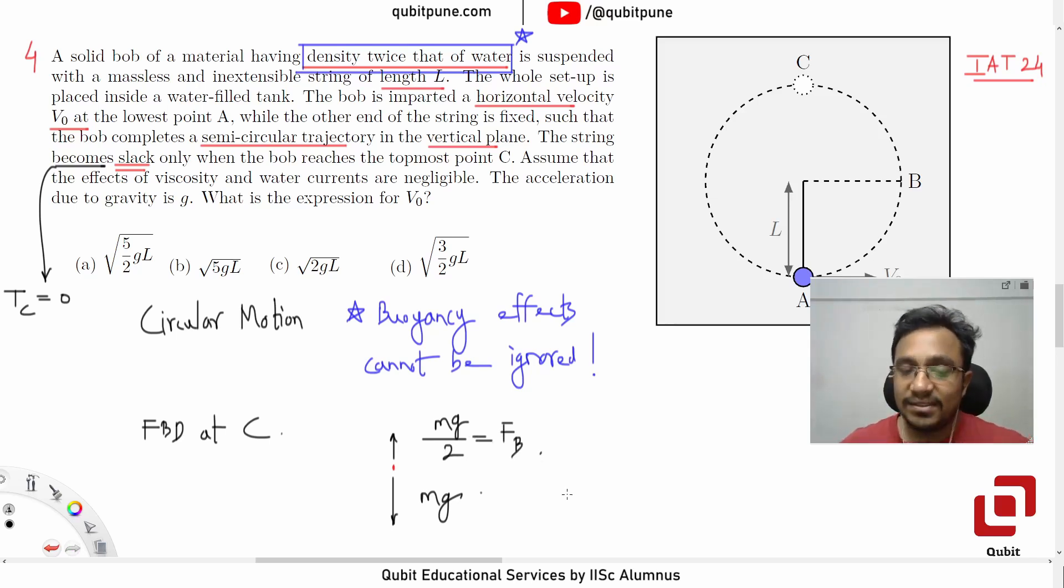Yes, sir. Why is it MG by two? Because the solid bob is twice as dense as water, which means water is 50% as dense as that of bob. The volume is equal because this is completely submerged. The volume of the water that it is displacing is equal to the volume of the bob. Density is half and buoyancy force always acts upwards. So MG by two will be the buoyant force.